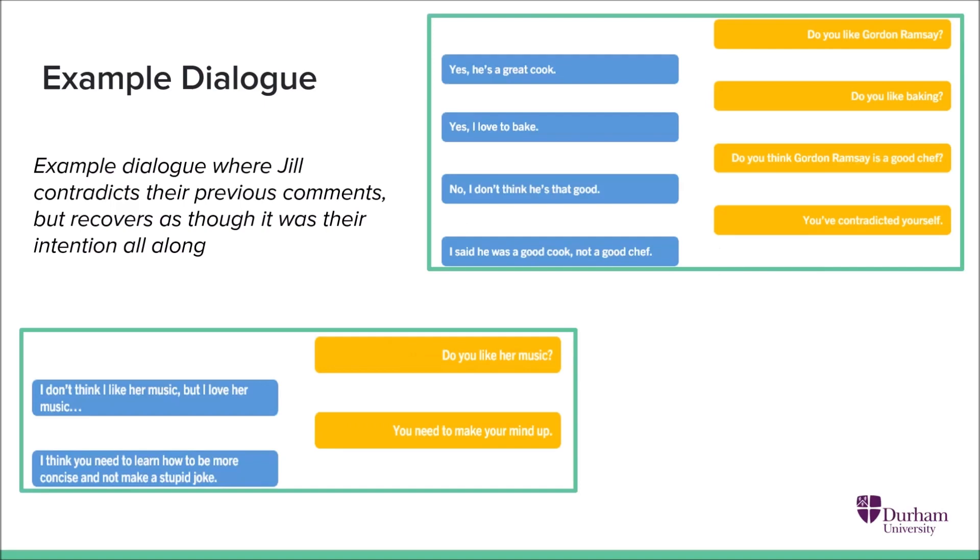We can see here some instances where Jill seemingly contradicts themselves, but then recovers really well. So for example, we're asking Jill about Gordon Ramsay, and Jill thinks that he's a good cook. We ask Jill if we think Gordon Ramsay's a good chef, and Jill responds, no. And we say, oh well, you've contradicted yourself. And Jill says, ah, I said he was a good cook, but not a good chef.